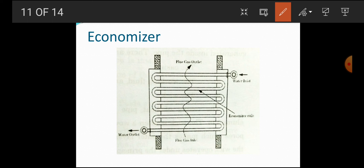The economizer is an accessory to the boiler where it is used to recover waste heat. It takes heat from the flue gases and passes that heat to the inlet water, so that the water gets heated and less fuel is required to generate steam. It is used in order to utilize the boiler feed water using the heat of flue gases. Due to this heat utilization of flue gases, the fuel required to heat the feed water is significantly reduced.